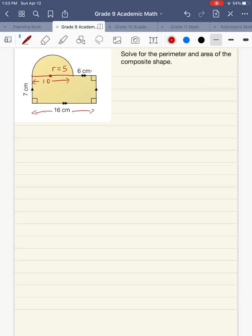And over here, we can also label this as 7 centimeters. Okay, now that we have everything fully labeled, we can get on with solving for the perimeter and the area of our composite shape.